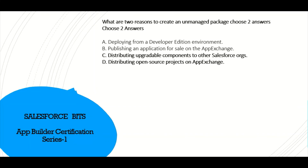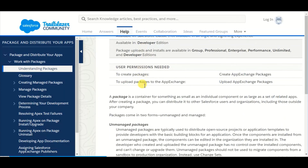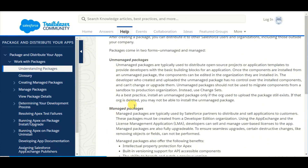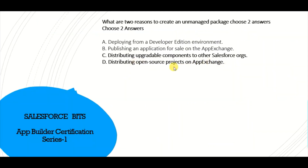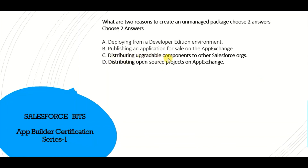Next question: what are the two reasons to create an unmanaged package? The two correct answers are: distributing upgradable components to other Salesforce orgs, and distributing open-source projects on AppExchange. The Salesforce documentation confirms that unmanaged packages are typically used to distribute open-source projects or application templates, providing developers with the basic building blocks for an application. This maps to both distributing open-source projects and distributing upgradable components to other Salesforce orgs.